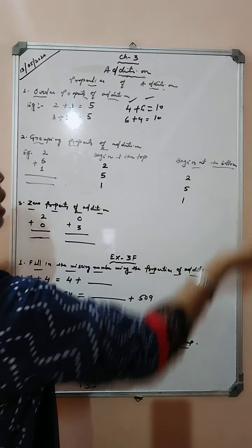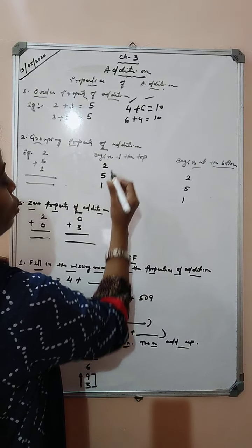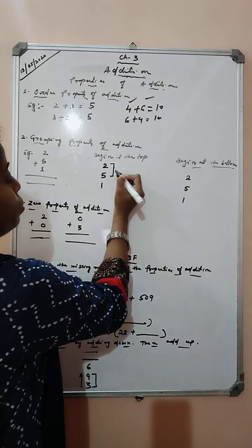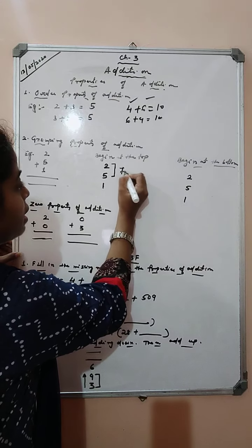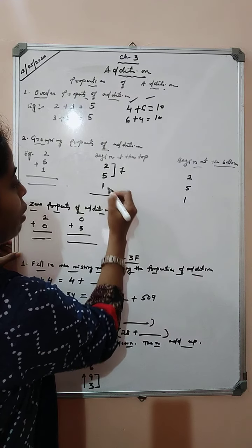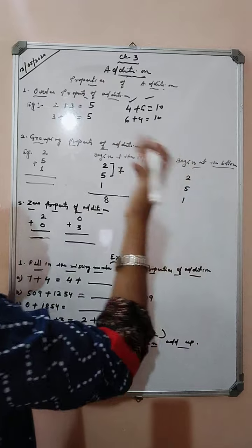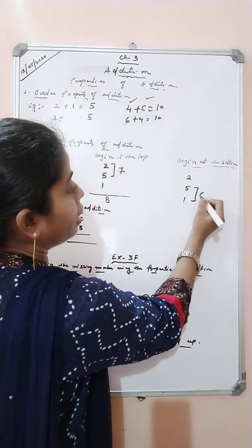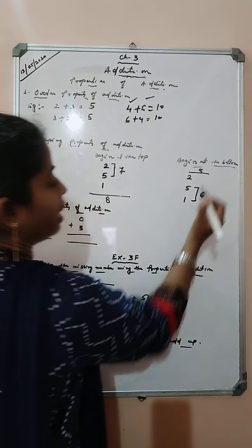There are 2 approaches: begin at the top or begin at the bottom. Like we have 2 plus 5 plus 1. Let us add the 2 numbers from the top: 2 plus 5 is 7. Now we have 7 and 1, so 7 plus 1 is 8. Now begin at the bottom — another method. You can start from the bottom: 5 plus 1 is 6. Now 6 plus 2 is 8.